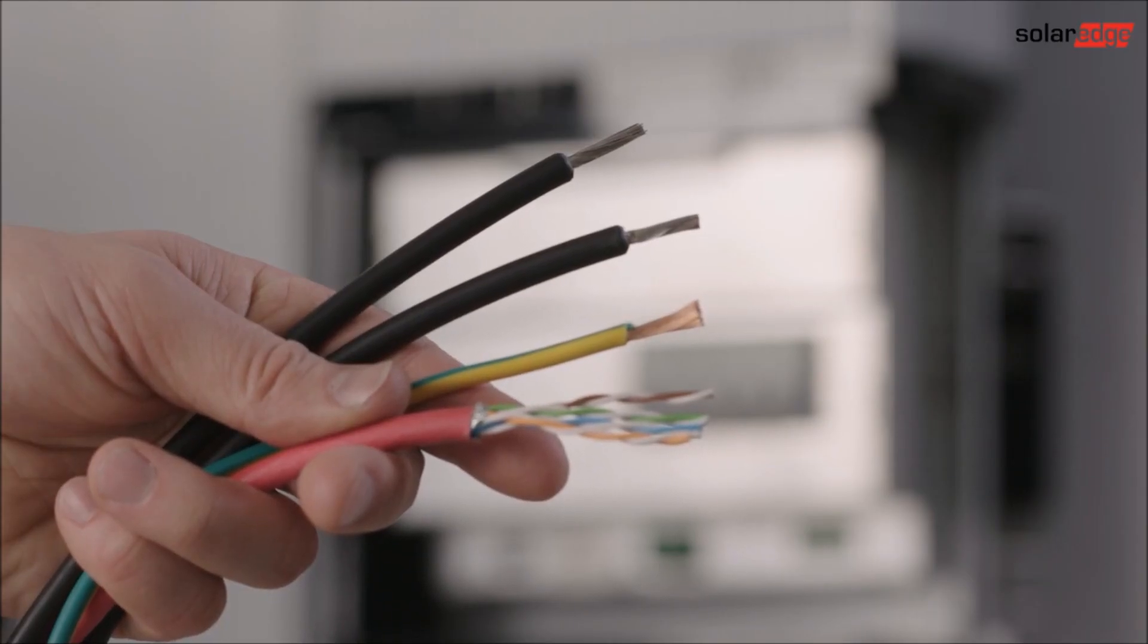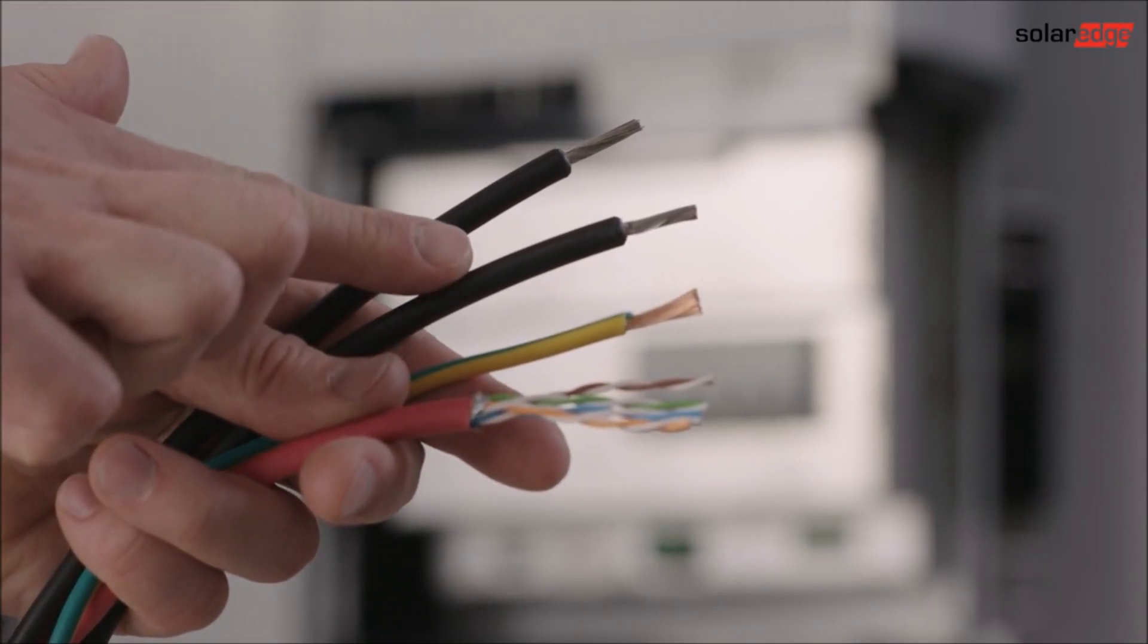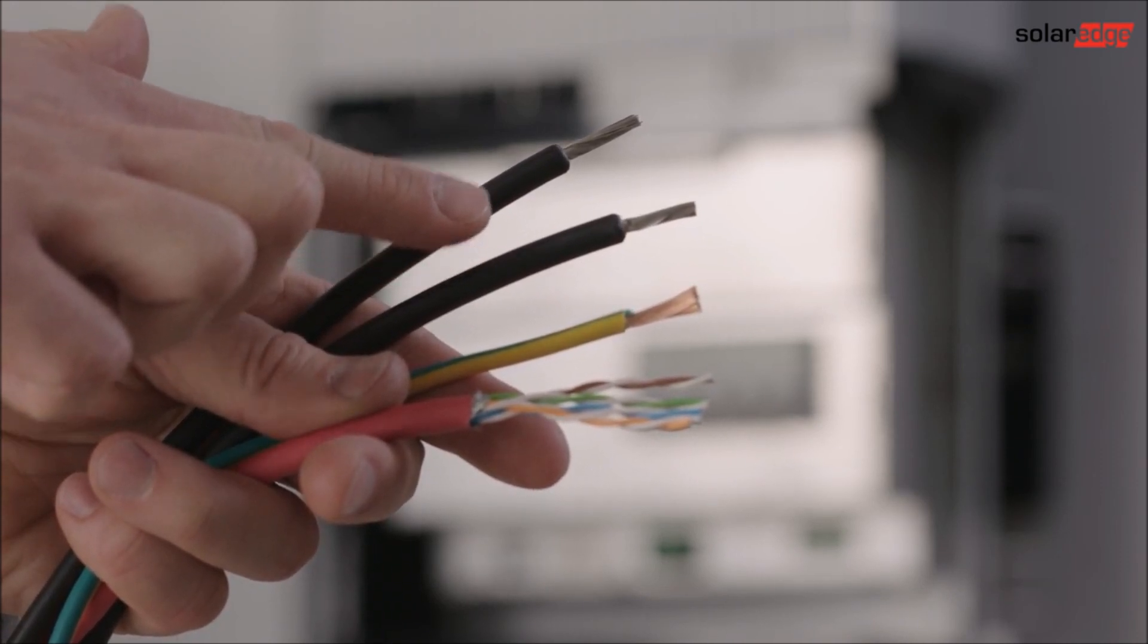For charging and discharging the battery, we need a regular PV cable. A four to six square millimeter cable is recommended.